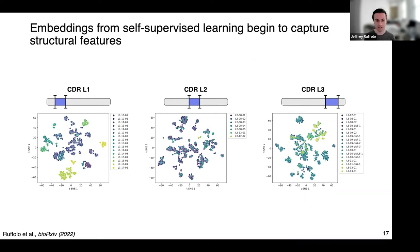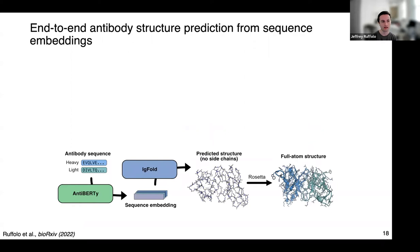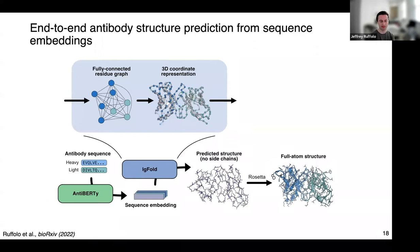Our goal is to predict three-dimensional structures, so we build on these representations. IGFold takes antibody sequences, encodes them with AntiBERTy, and learns end-to-end to predict the backbone structure. Once we have that backbone, we put it into Rosetta to add side chains and resolve discrepancies such as clashes and non-ideal bond angles. We treat the antibody structure as a fully connected residue graph, allowing the model to learn associations between residues and pass information across the entire sequence and structure, before migrating to a 3D coordinate representation.